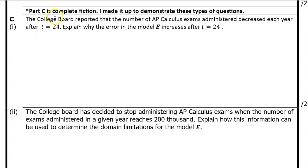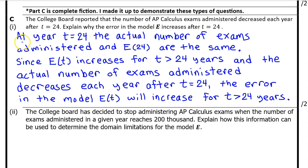A quick disclaimer: Part C is complete fiction — I made it up to demonstrate these types of questions. C, Part 1: The College Board reported that the number of AP Calculus exams administered decreased each year after T equals 24. Explain why the error in model E increases after T equals 24. At year T equals 24, the actual number of exams administered and E at 24 are the same. Since E of T increases for T greater than 24 years, and the actual number decreases each year after T equals 24, the error in the model E of T will increase for T greater than 24 years. Make sure you mention that the actual number and the model are the same at T equals 24.